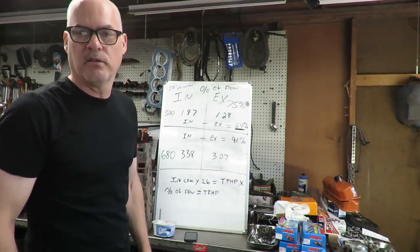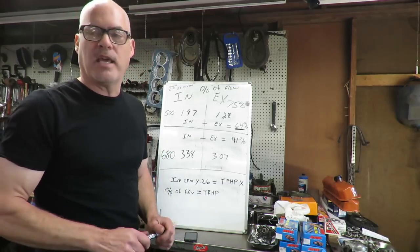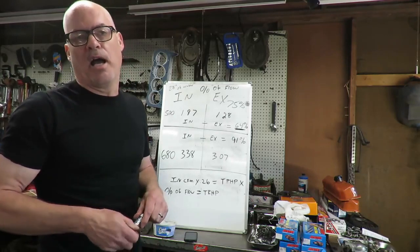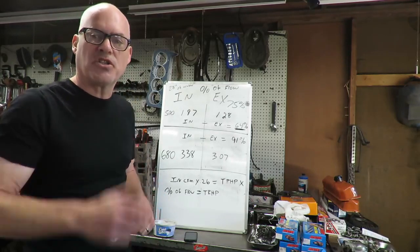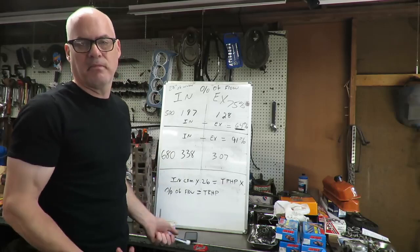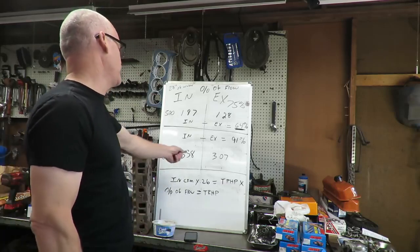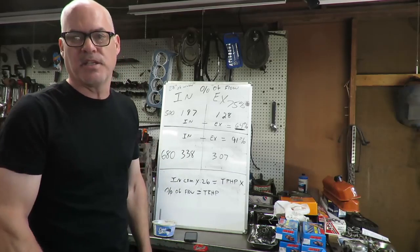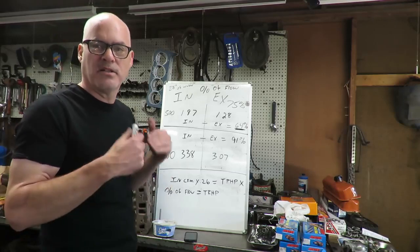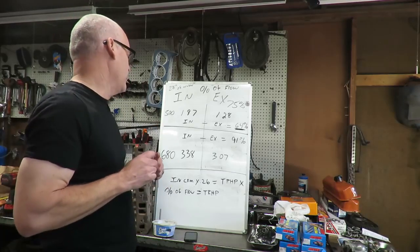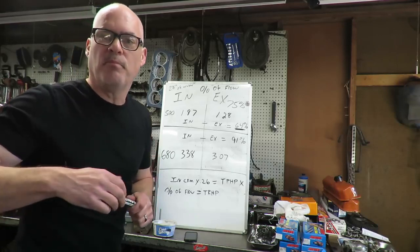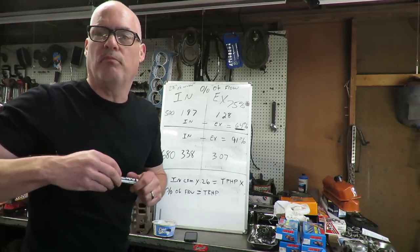Now let's look at the big block ported monster heads on my 427 — they flow 338 CFMs on the intake and 307 CFMs on the exhaust. Do the division: 307 divided by 338 = 91% of flow. That's above 75%, so we would definitely want a single profile cam — which is exactly what we put in there. The camshaft in that engine has about 650 lift, and from 650 to 680 lift it only went up about 10 CFMs, so we're comfortable with that 650 lift cam.